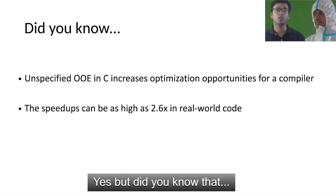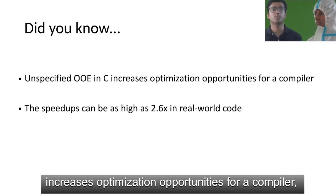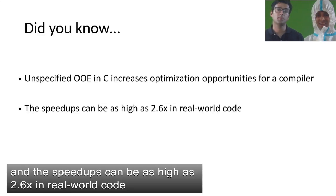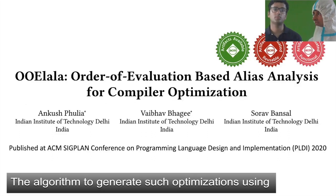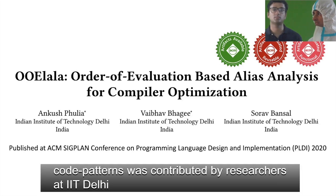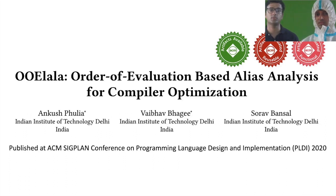But did you know that unspecified order of evaluation in C increases optimization opportunities for a compiler? The speedups can be as high as 2.6x in real-world code. The algorithm to generate optimizations using such code patterns was contributed by researchers at IIT Delhi, and their work appeared at PLDI 2020, a top-tier conference in programming languages.